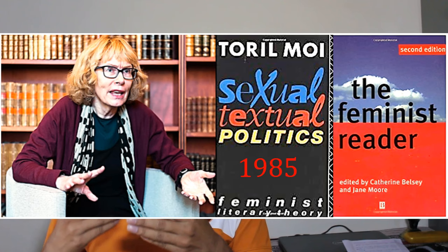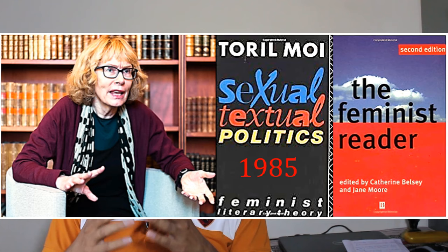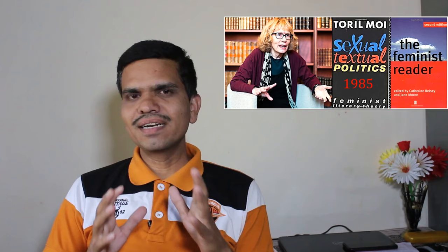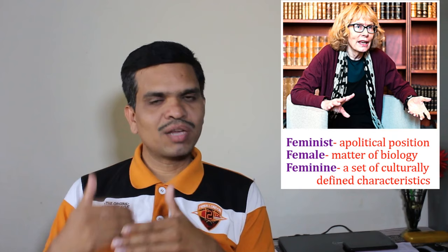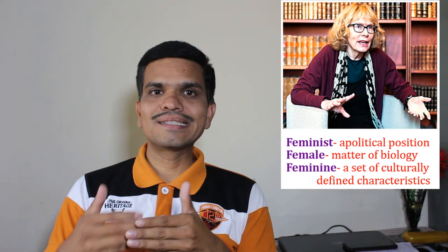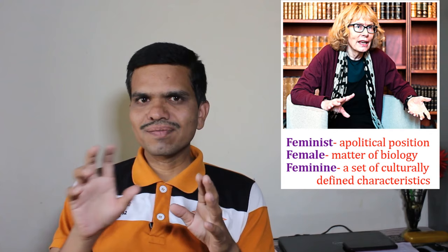Next we have two significant critics in the field of feminism. Toril Moi wrote Sexual/Textual Politics and also composed an essay called Feminist Reader, in which she discusses three terms regarding feminist criticism: feminist, female, and feminine. According to her, feminist is a political position, female is a matter of biology, and feminine is a set of culturally defined characteristics for women. These three concepts are significant in understanding how feminist criticism works.